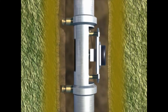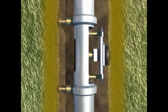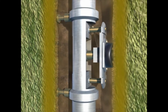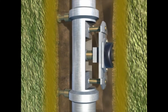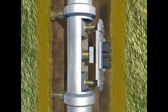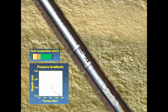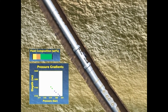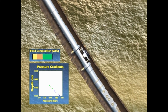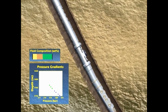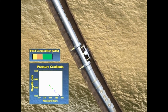In this method, a spring forces the tool into contact with the side of the hole so that the formation pressure and flow samples can be taken. The main advantage of wireline formation testing is that multiple zones can be tested at once on a single run.